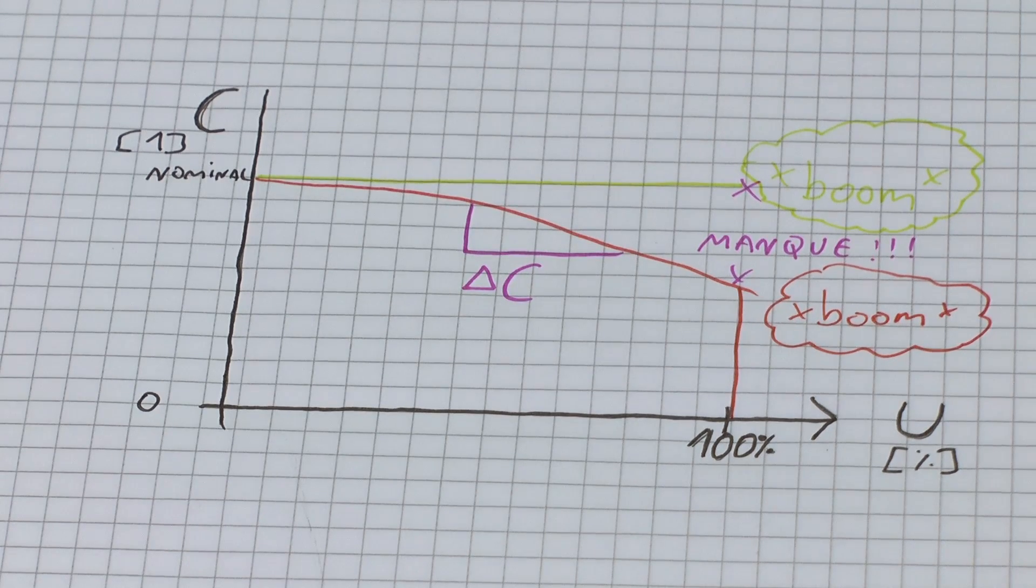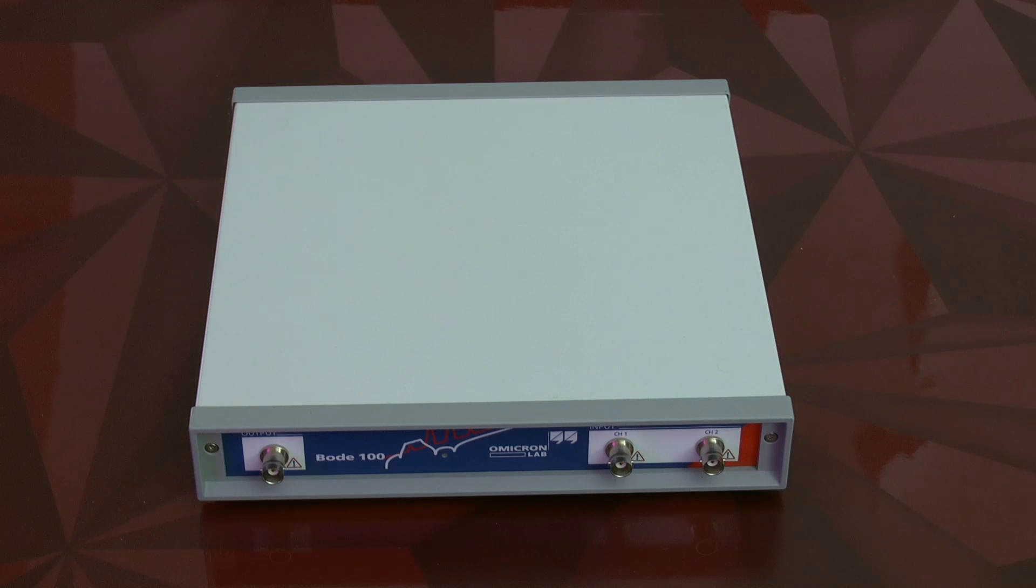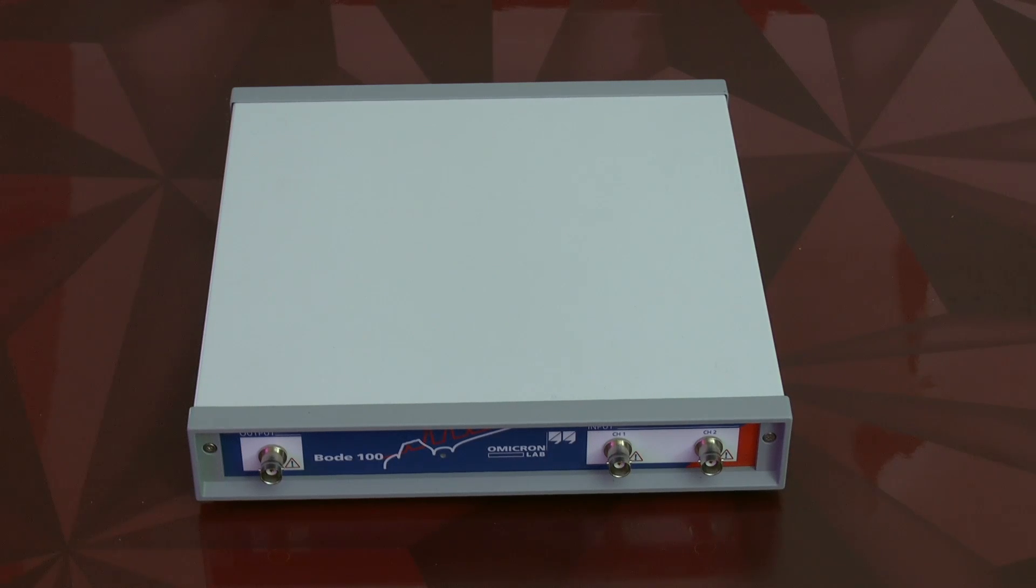And now we're going to look at how we can generate them very efficiently. You might now wonder how we are going to generate these curves in the most comfortable way. And the answer for this is this unit here, the Bode 100 by the Austrian company Omicron Lab. In principle, this is a vector network analyzer.